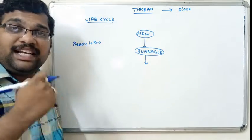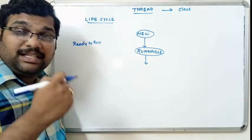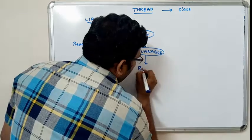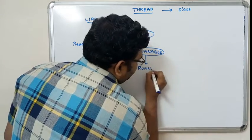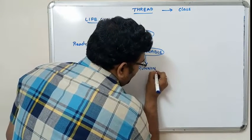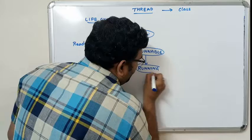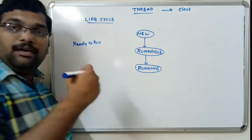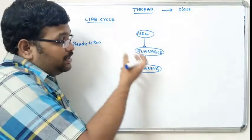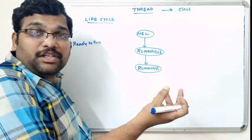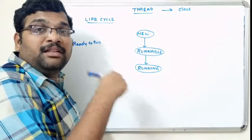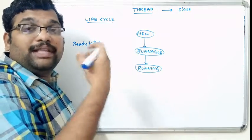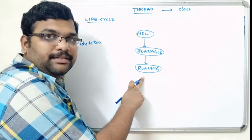If a processor is available, the thread will be moved to the running state. That means the thread is allocated to the processor and starts its execution. That state is called the running state.